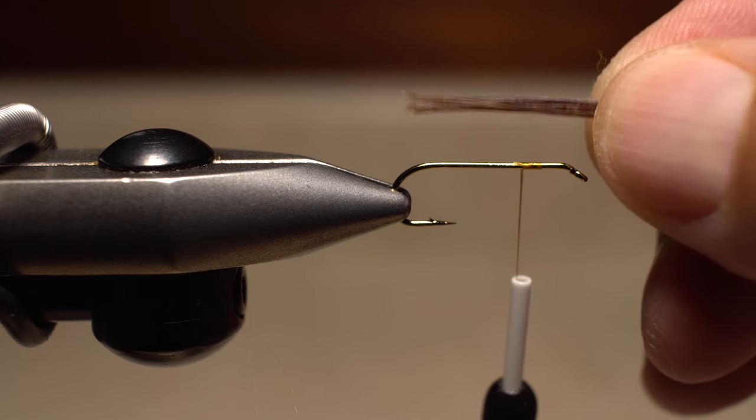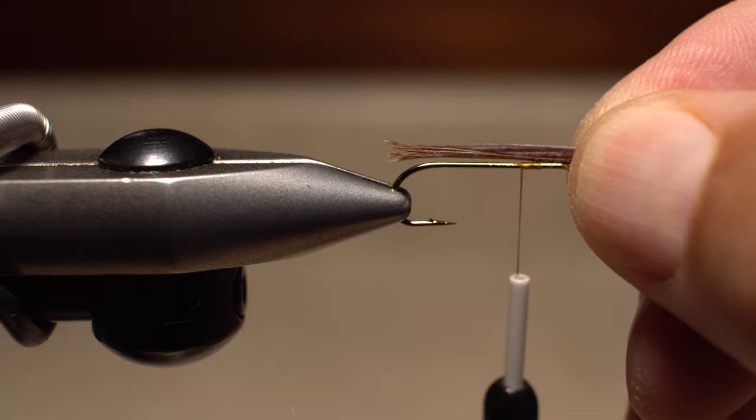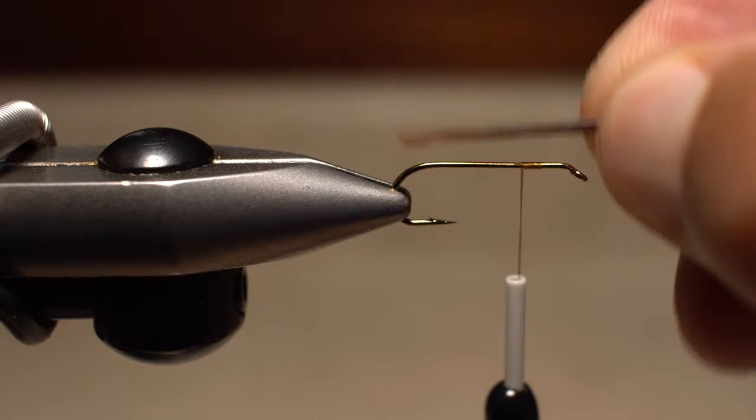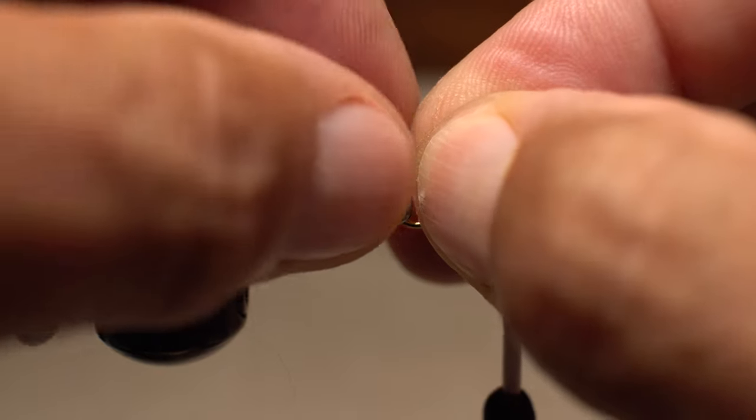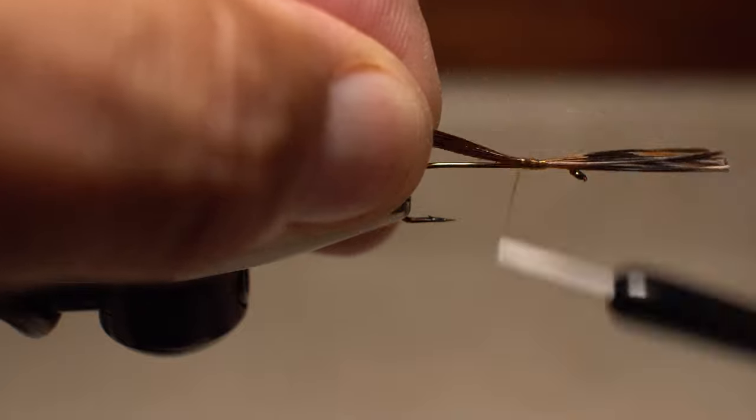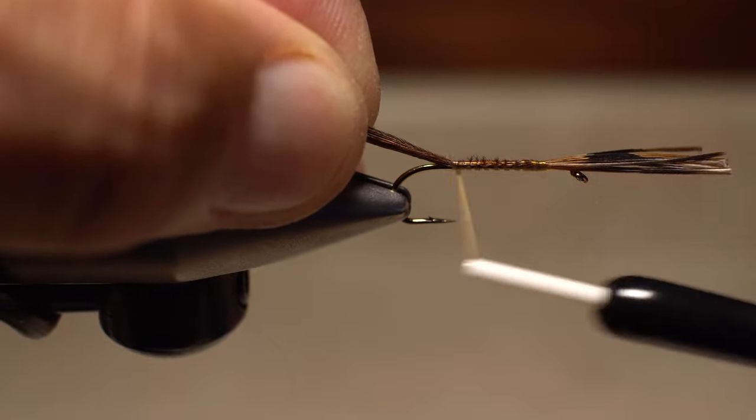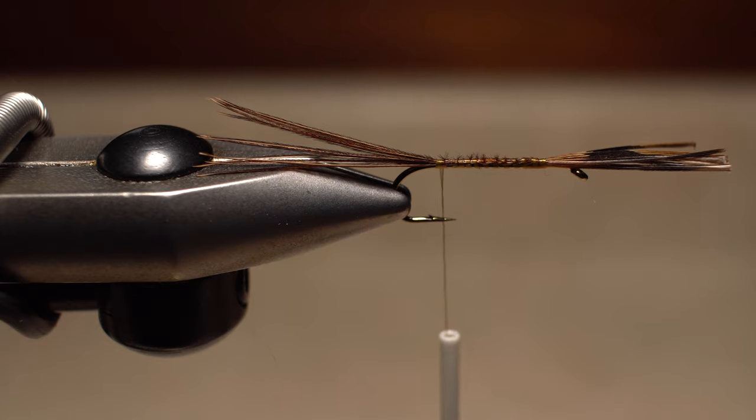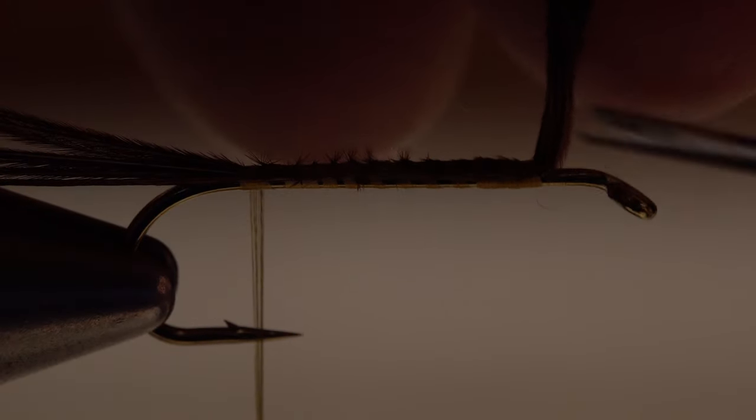With the fibers in the fingertips of your right hand, measure to form a tail a full hook in length and then transfer that measurement rearward to the start of the hook bend. With a pinch wrap, begin securing the fibers to the top of the hook shank. Make tight open spiral wraps of tying thread all the way back to the bend. Once the fibers are well secured, lift the butt ends up and snip them off close.